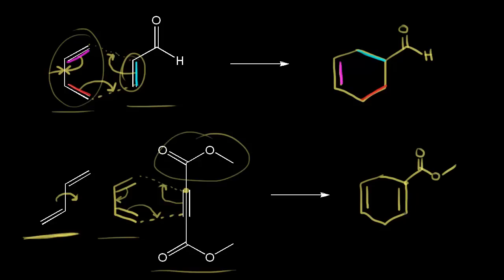Following our electrons: the red electrons start here on the diene and move into here to form this bond. The blue pi electrons on the alkyne move into here to form this bond. And the magenta electrons move into here. So this is our product.